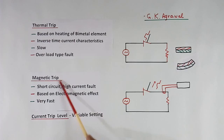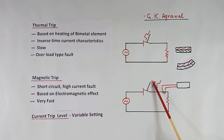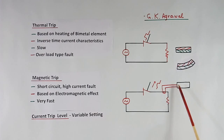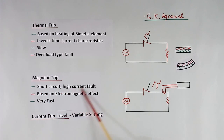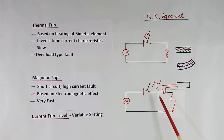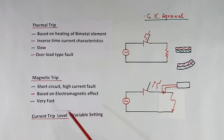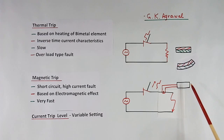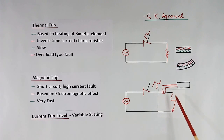Now magnetic trip. This is supply, this is the MCCB contact, and this is load. Here one CT is shown, which is part of the MCCB. This magnetic trip operates based on electromagnetic effect. Whenever a short circuit or high current comes, very heavy current will flow. The CT will send the current through a coil inside. Because of the electromagnetic effect of that coil, a magnetic material will get attracted, and because of the movement of that material, this contact will open. This is very fast — because heavy current will flow, immediately this coil will activate, and within a few milliseconds this breaker will trip.